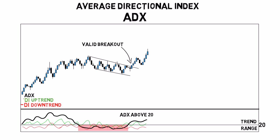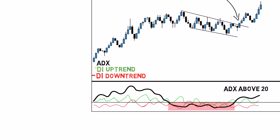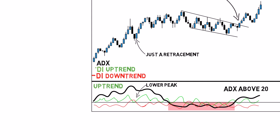Another important thing about the plus and minus DI lines is the height of the peaks after crossovers. Here, the plus DI line has been on top for some time, suggesting an uptrend. When the minus DI line crosses over, we measure the height of its peak. If the peak is lower than the plus DI's last peak, it shows that the recent price action has been just a retracement and we should still be looking for buying opportunities.